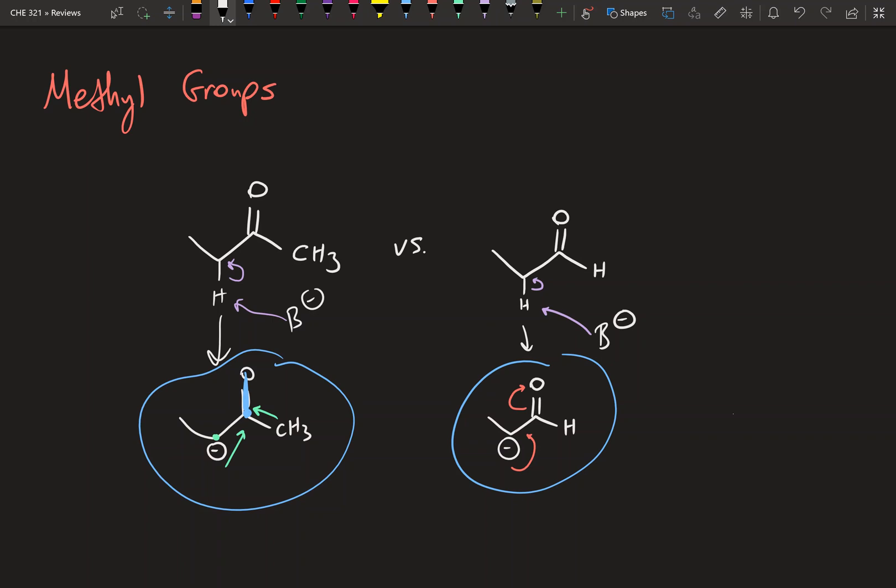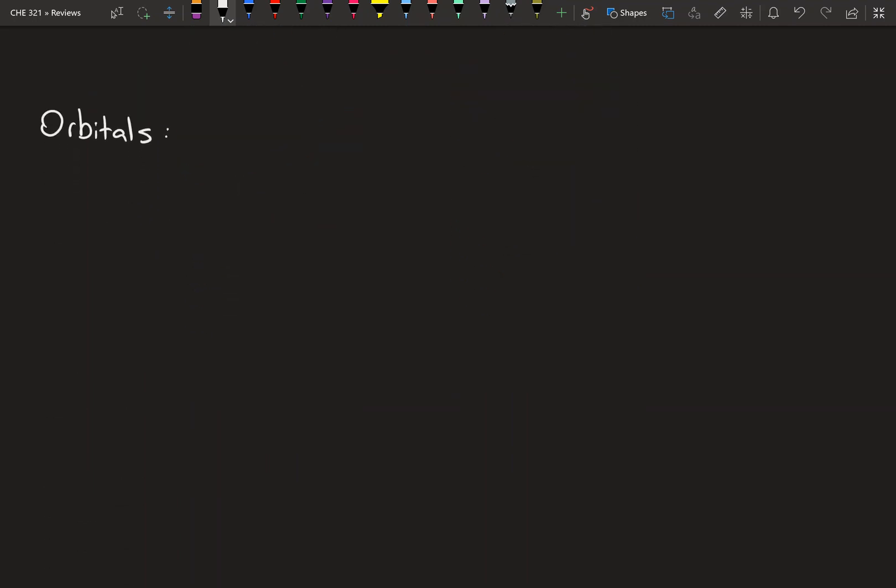Just keep that in mind with methyl groups and the idea of competing resonance that we covered before. Now we're going to move on to the last factor in REO, and this is going to be orbitals. I drew these three structures here, and we're going to be focusing on these carbon atoms.